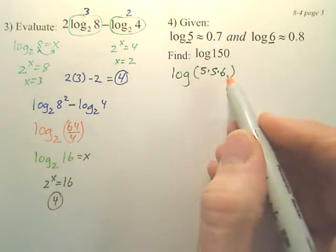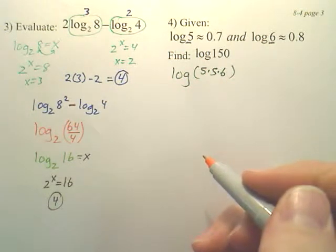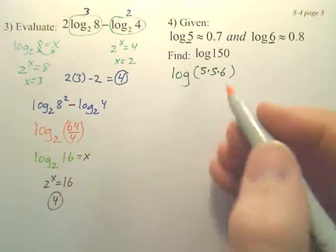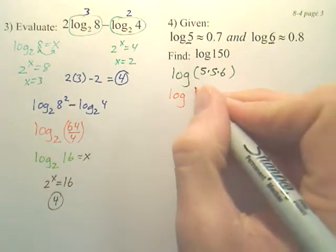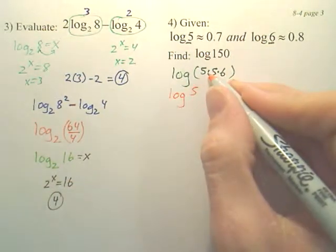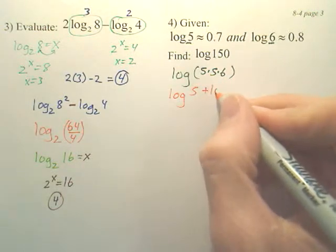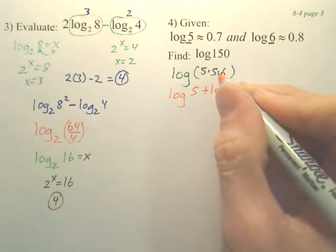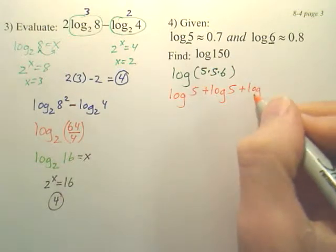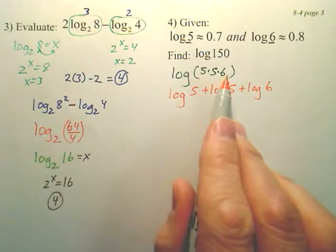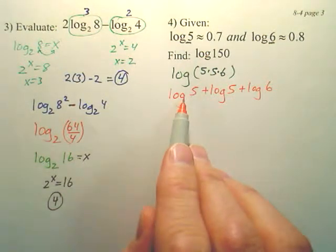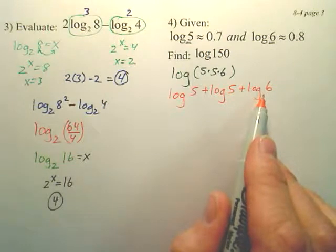Now, can I expand this? Aren't those multiply? So, that would be log 5. What does multiply mean? Plus. Log 5. What does multiply mean? Plus. Log 6. So, 150 is 5 times 5 times 6. Multiplies mean add, so that's really log 5 plus log 5 plus log 6.